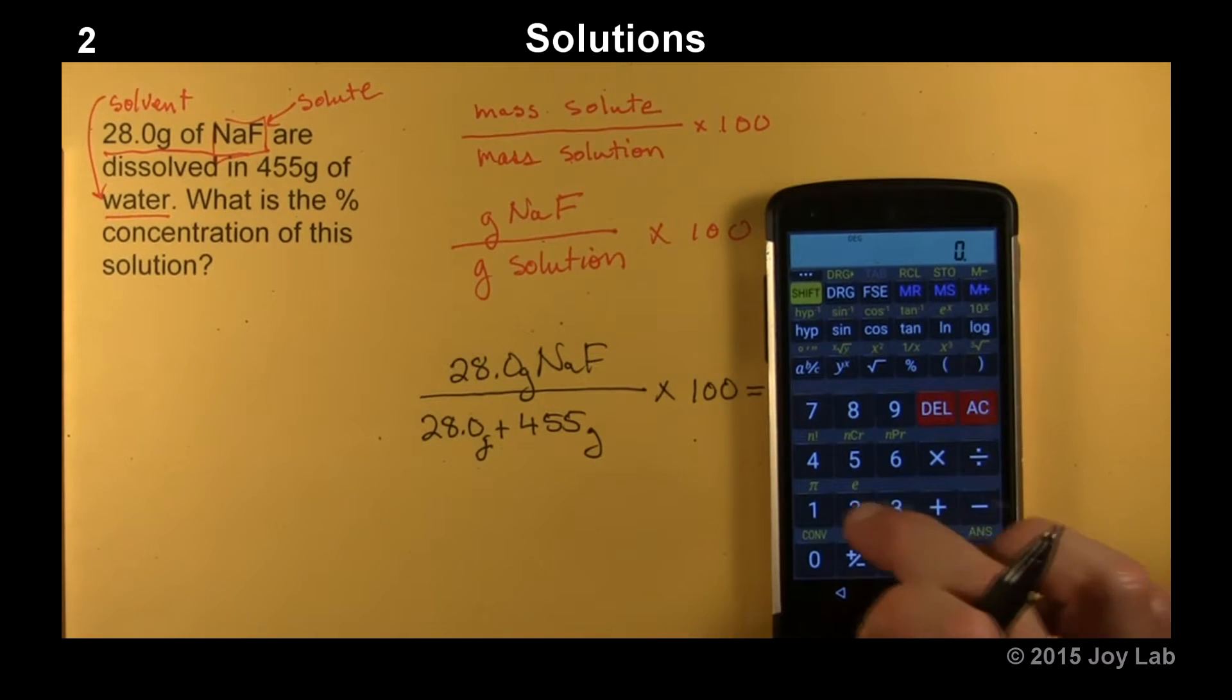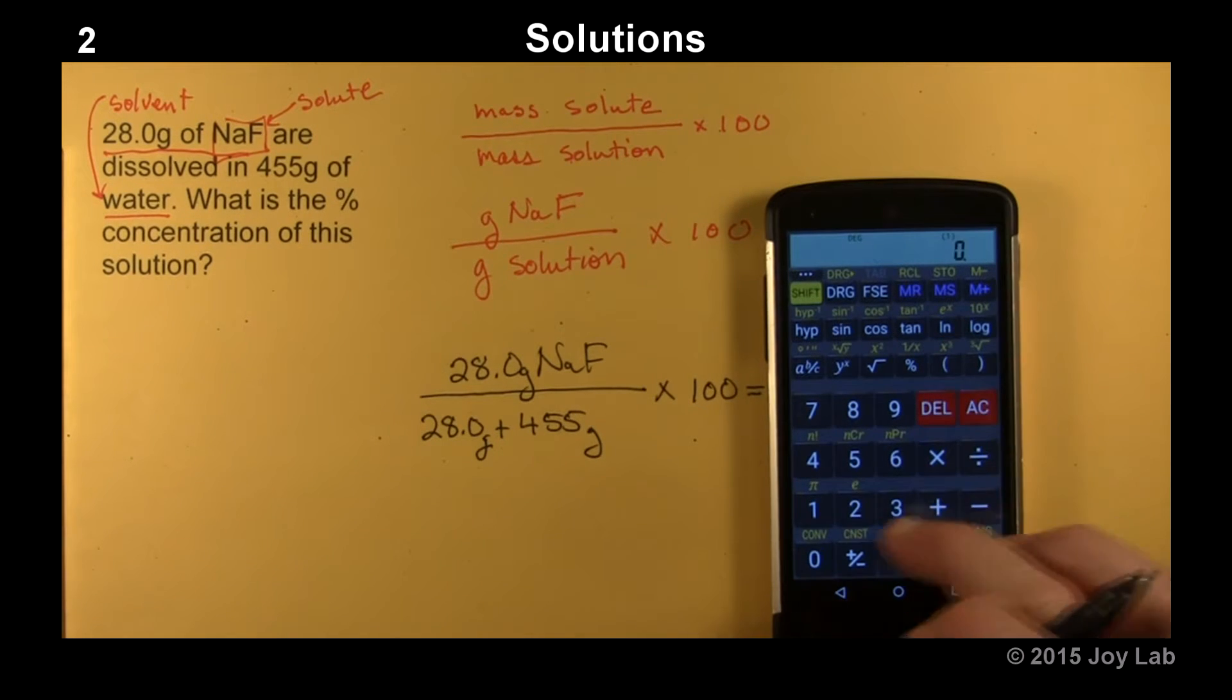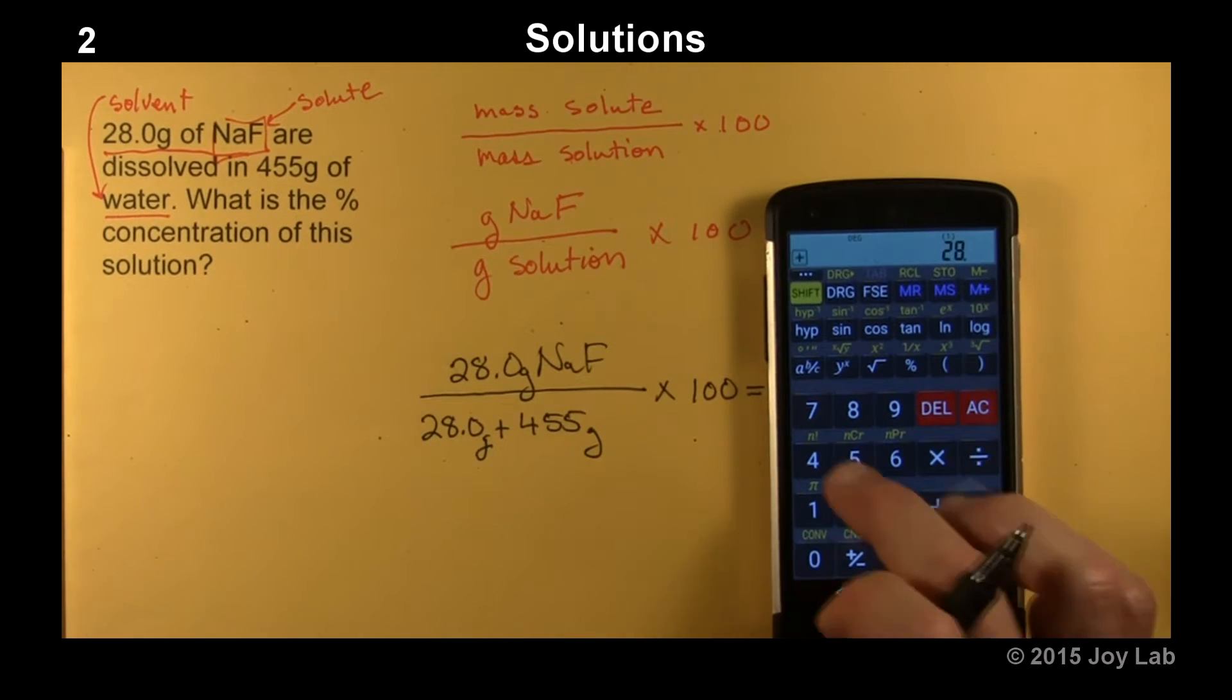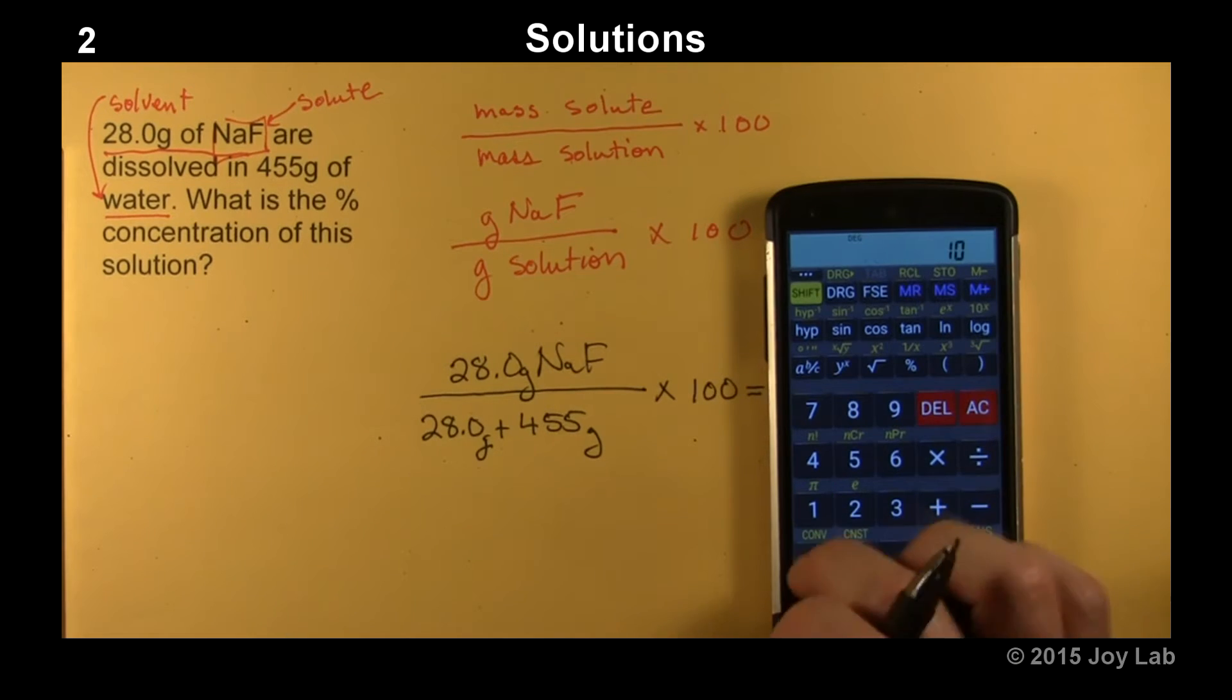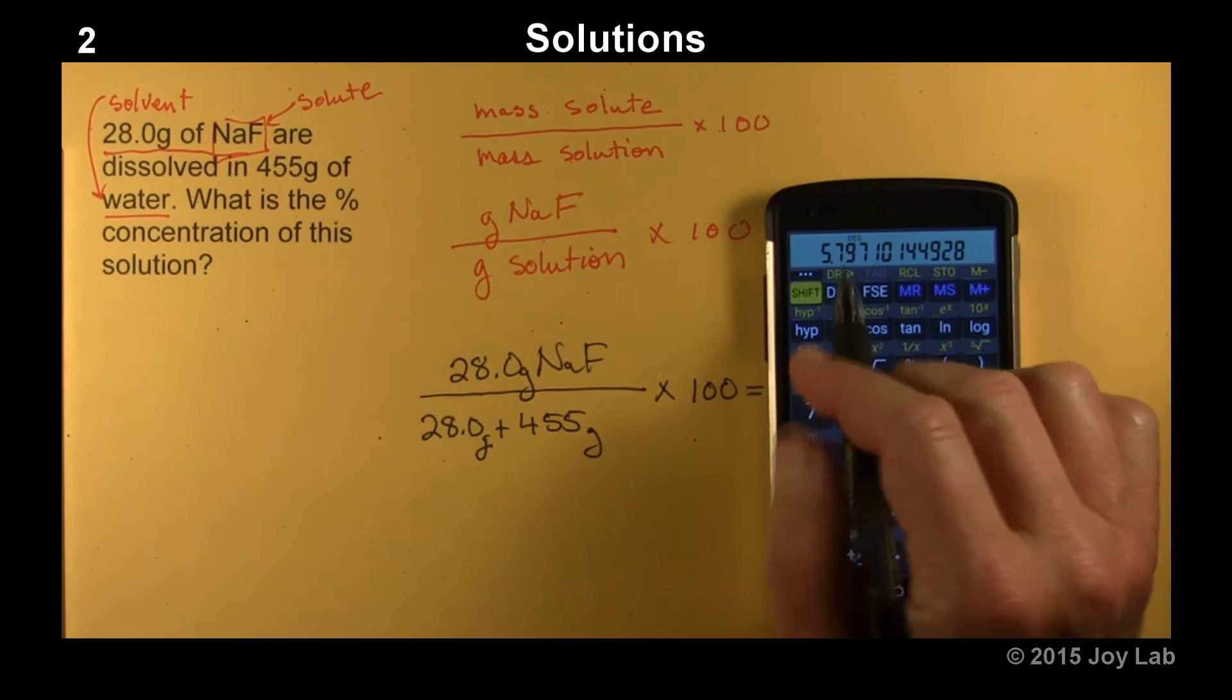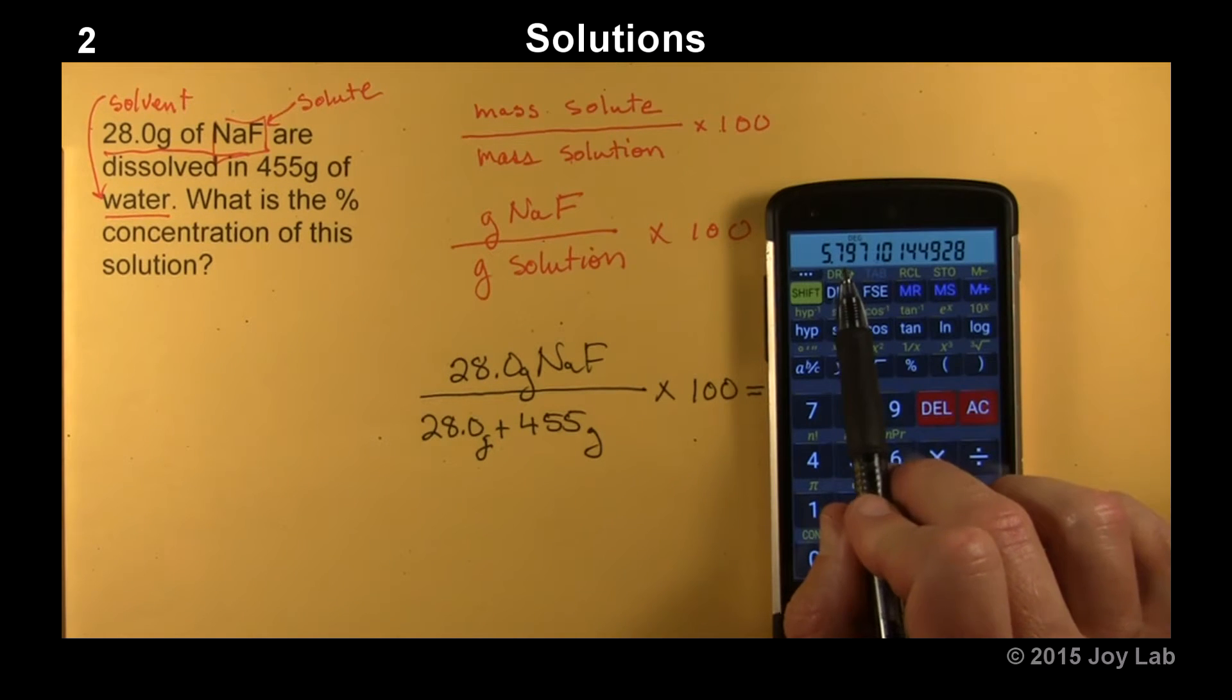So we have 28 divided by, and I'm going to go ahead and open the parentheses, 28.0 plus 455 equals, and then we're going to take that times 100. How many sig figs? Three. 5.79, so that 7 is going to make the 9 a 10. So it's going to be 5.80%.